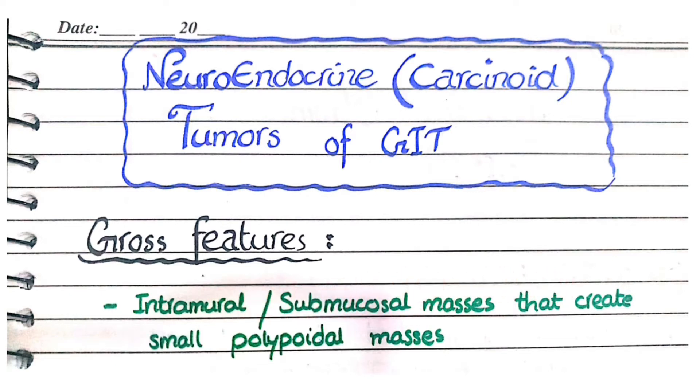They are similar to all tumors of the gastrointestinal tract that arise from the walls of the GIT and grow to form a mass that resembles a polyp.